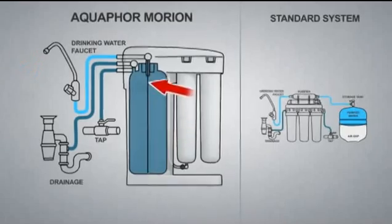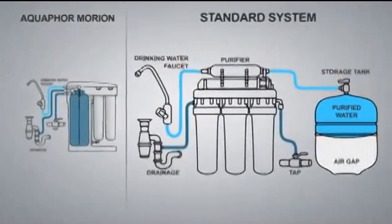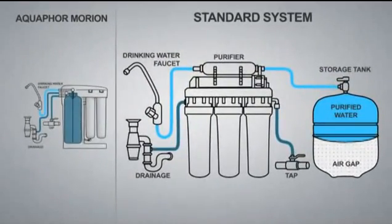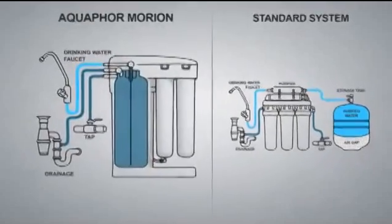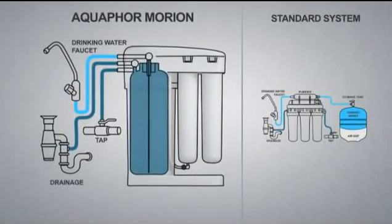With conventional reverse osmosis filters, when their storage tank is completely filled, one-third of the tank is taken up by air, which leaves less room for the purified water. In the Aquaphor Morion pressurized water tank system, the entire volume is occupied by purified water.